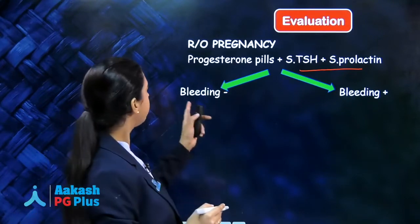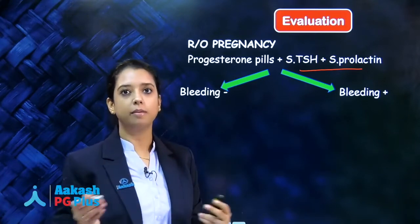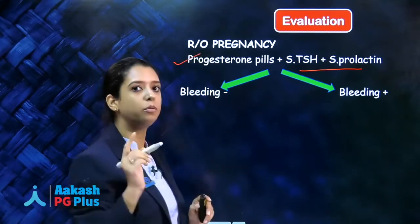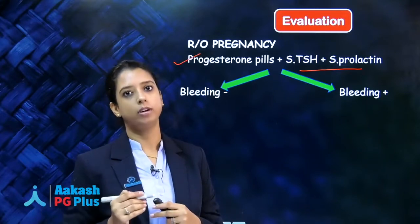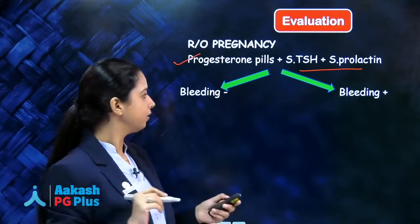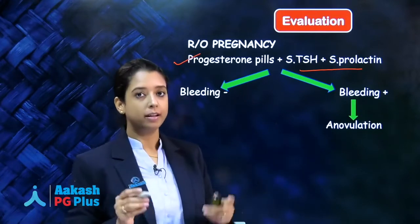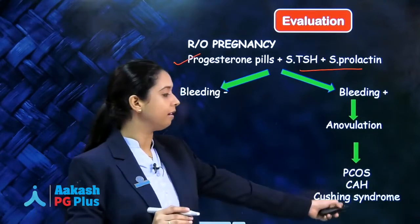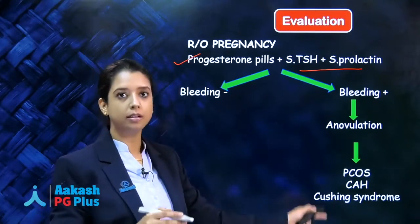In the progesterone challenge test, if the patient bleeds, it means her estrogen level is normal. What she is lacking is progesterone — the one you are giving her. Why is she lacking progesterone? Progesterone is formed after ovulation by the corpus luteum. If she is lacking it, she is not ovulating — it is a case of anovulation. In anovulation, we mainly need to exclude three causes: PCOS, which is the most common cause, congenital adrenal hyperplasia, and Cushing syndrome.